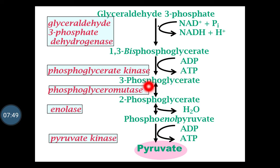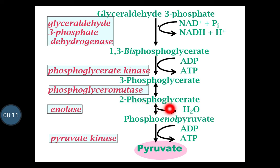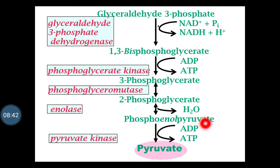Energy molecules are created in the second phase of glycolysis. Then, 3-phosphoglycerate is converted to 2-phosphoglycerate by the enzyme phosphoglyceromutase. From 2-phosphoglycerate, phosphoenolpyruvate is formed by the enzyme enolase, and from phosphoenolpyruvate, formation of pyruvate takes place by the enzyme pyruvate kinase. Thus, the formation of pyruvate takes place. In the last stage, energy molecules are produced. In phase 1, energy molecules are used, and in phase 2, energy molecules are formed during the process of glycolysis.